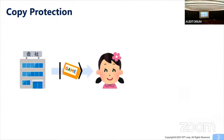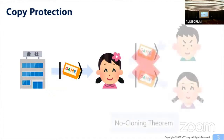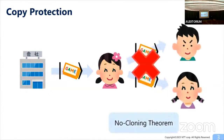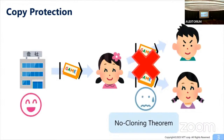To prevent such a copying attack, one way is to encode the game program into a quantum state. Then by the no-cloning theorem, Alice cannot copy the game and so cannot distribute it to her friends. So they are not happy, but the company is happy because the copy is prevented. This is the concept of quantum copy protection, for which the no-cloning theorem is essential.